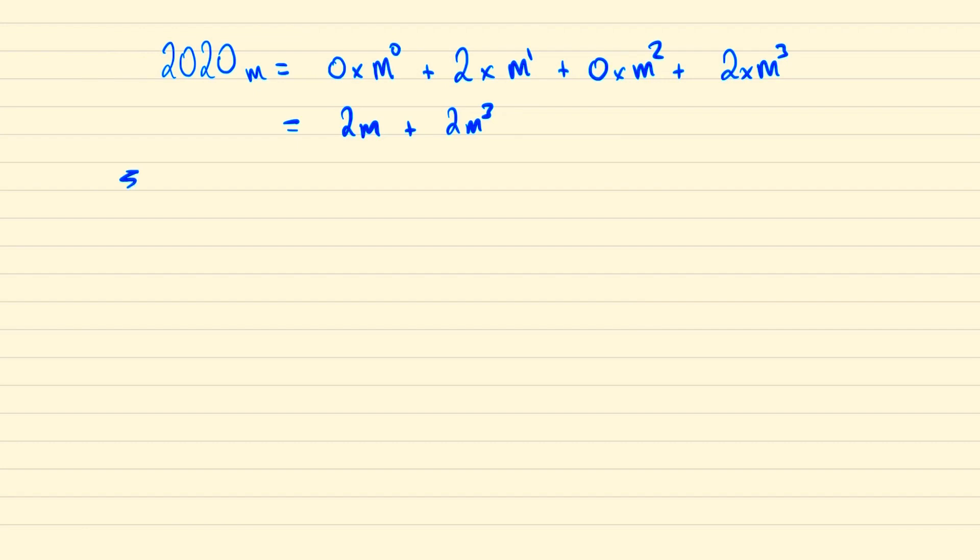And so we're looking for the sum from 3 to n of 2m plus 2m cubed which we can write as the sum of 2m plus 2m cubed.